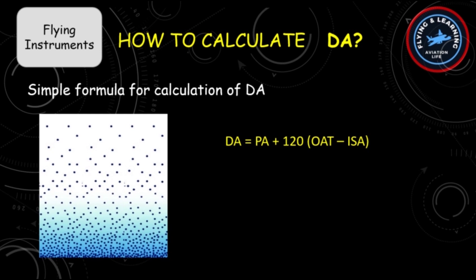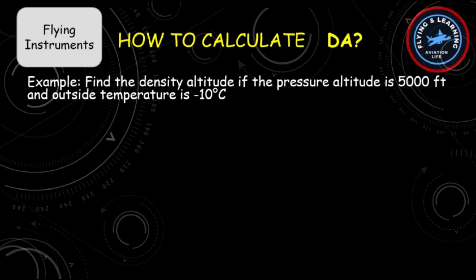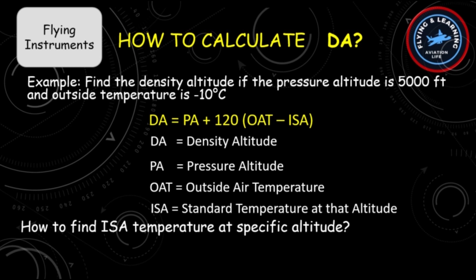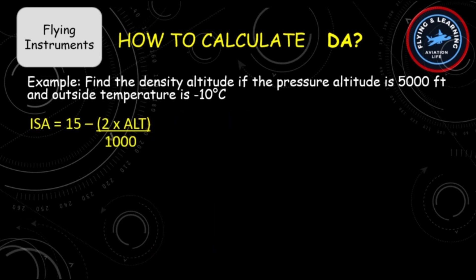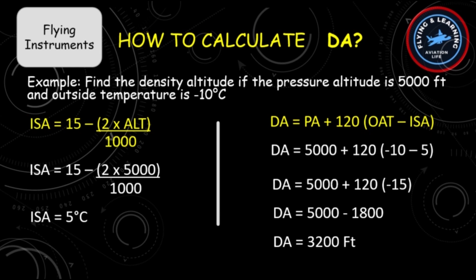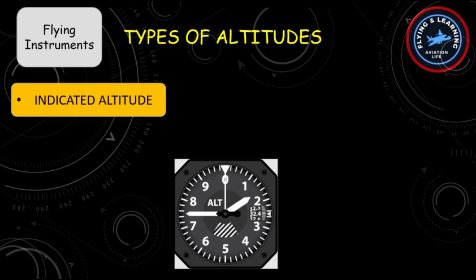The simple formula for calculating density altitude is: DA = PA + (120 × (OAT − ISA)), where DA is density altitude, PA is pressure altitude, OAT is the outside air temperature, and ISA is the standard temperature at that altitude. To find the standard temperature at a specific altitude, a formula is shown on the screen. For example, find the density altitude if pressure altitude is 5,000 feet and outside temperature is minus 10 degrees Celsius. First, we calculate the standard temperature at 5,000 feet, which comes out to be 5 degrees Celsius. The density altitude then comes out to be 3,200 feet.